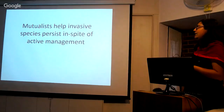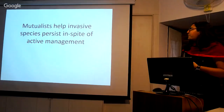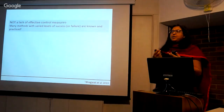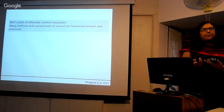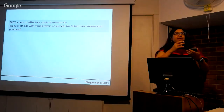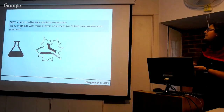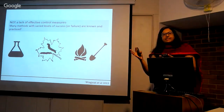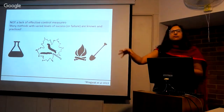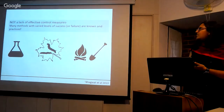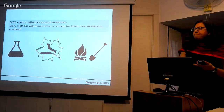The second section of this presentation is how mutualists help invasive species persist despite active management. Lantana has been around for 200 years and has been a known problem plant throughout. This review paper from 2013 looked at the invaded range of Lantana in Australia, South Africa, and India, and found that there were chemical, biological, and mechanical methods of controlling Lantana — effective at removing individuals or smaller populations, but not at very large scales. Combinations of these methods have not worked in controlling Lantana.